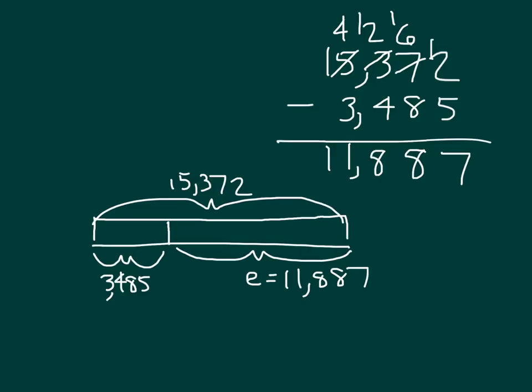Can you read this whole problem? We had 15,372 minus 3,485 equaling 11,887. We're going to check our answer this time.